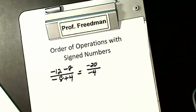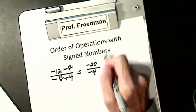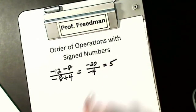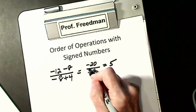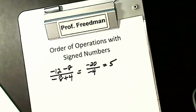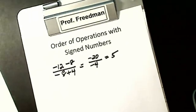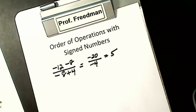Now I'm in multiplication and division rules. Like signs are positive, unlike are negative. 4 into 20 is 5, and I do have like signs, so it's positive 5. Let's do another one.